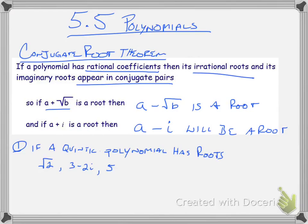So if I have this question, a quintic polynomial has roots square root of 2, 3 minus 2i, and 5, the question will be, what are any other roots? Well, what you have to look at is the roots that you're given, any of them irrational or imaginary, you will also need to include its conjugate.